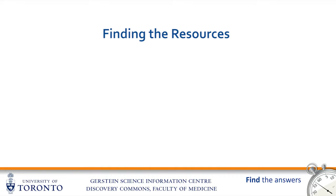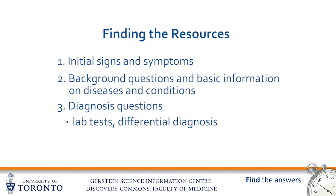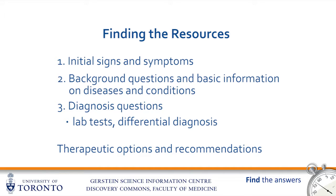A good way to begin is to divide problem-based or case-based learning into three distinct areas. One, initial signs and symptoms that a patient presents. Two, learning some basic information about the conditions that may be causing these symptoms. Three, solving diagnosis questions like lab test results and differential diagnosis. And finally, when you know all that information, you can determine the best course of therapy based on the most compelling and recent evidence.